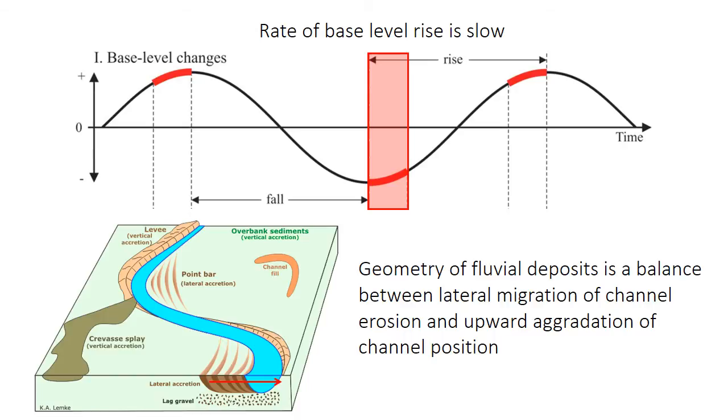So in addition to having a steep gradient, at the beginning of base level rise, the rate at which base level is rising, and therefore the rate at which accommodation space is being created, is slow. And that has very important consequences. This means that the rate of aggradation, the rate at which the channel builds upwards, is also slow. So this has important but kind of complicated impacts on the geometry of the fluvial deposits.